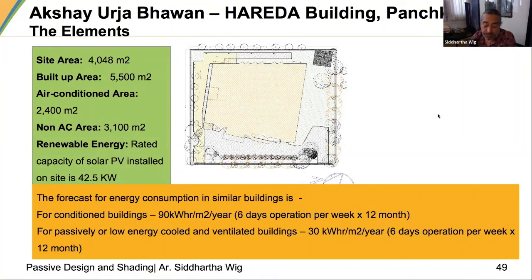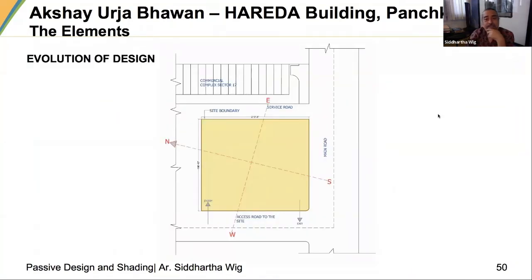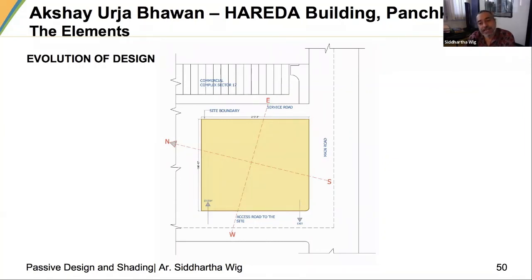The site was nearly square, slightly rectangular. The advantage was that it was open on three sides — east, south and west. North was slightly enclosed. Beyond it was a little common area, then a big road, another common area, and then lower residential buildings. So we had a completely unhindered south face.